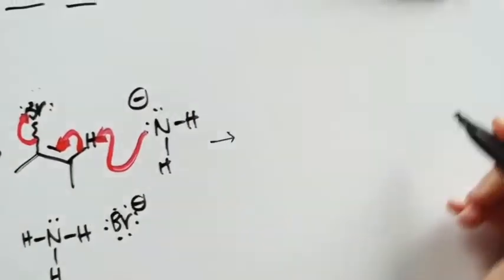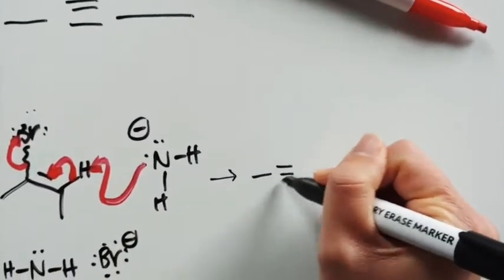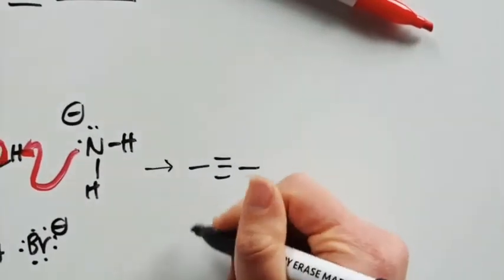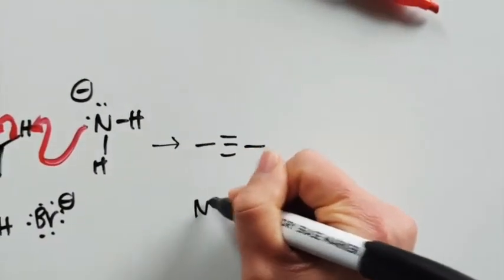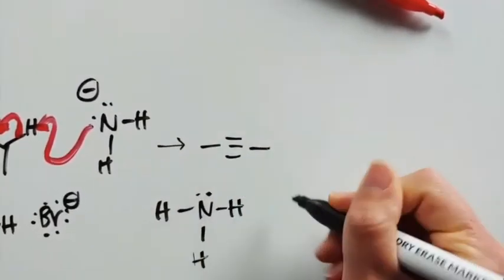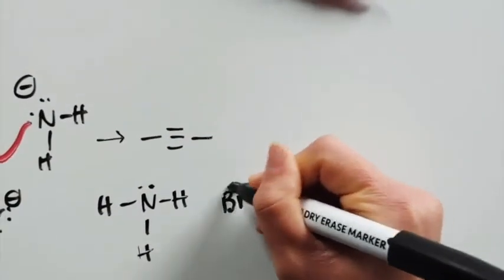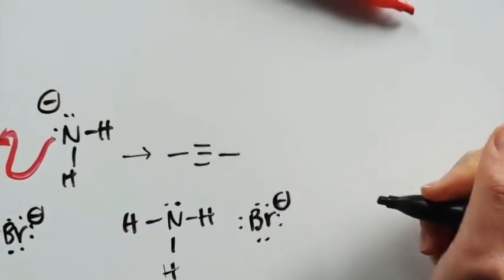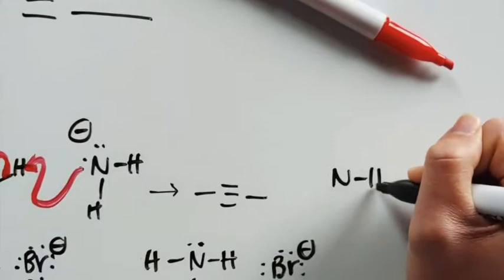And so now we're going to have our internal alkyne almost, we're almost there, but we want to make sure that we draw out our NH3. We want to make sure we include our leaving group. And then another important thing to note is we still have NH2 minus.